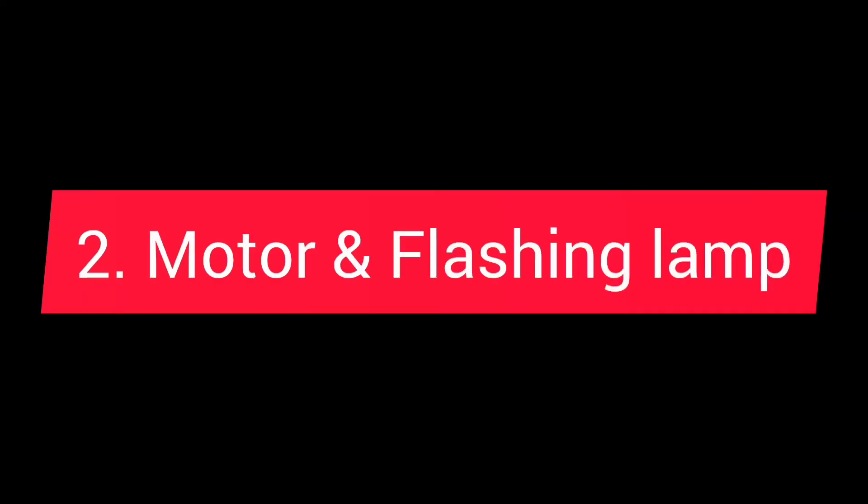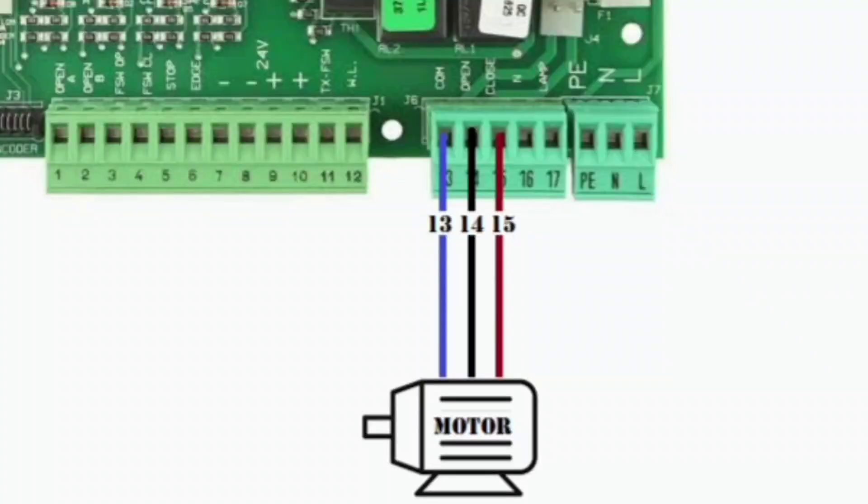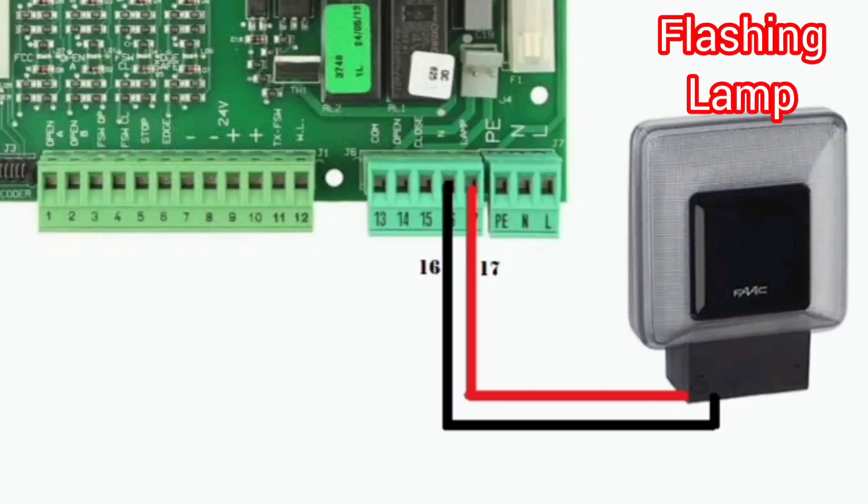Step 2, motor and flashing lamp. Motor is pre-connected to terminals 13, 14 and 15. Connect flashing lamp to terminals 16 and 17.